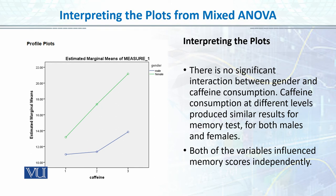I believe that if we increase the data, we can see that in the second or third level our interaction will be achieved. But so far, you can see that whether we are male or female, if caffeine is low, medium, or high, the behaviors are almost the same — they have more errors and then more errors. So both of the variables influence memory scores independently.